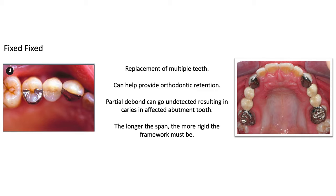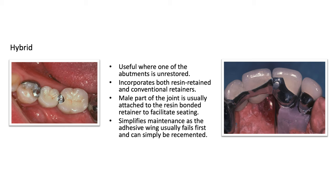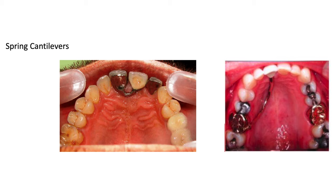The hybrid design can come with a male and female component, which allows some freedom of movement. If one retainer debonds, you can remove the male component, remake the new pontic with a new retainer, and slot it back to the crown without having to take the crown off. A fourth design, called a spring cantilever, is useful when the adjacent teeth to the gap you want to replace are compromised.